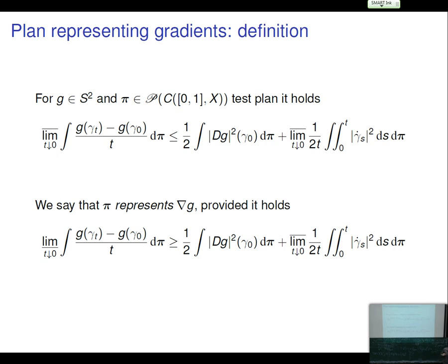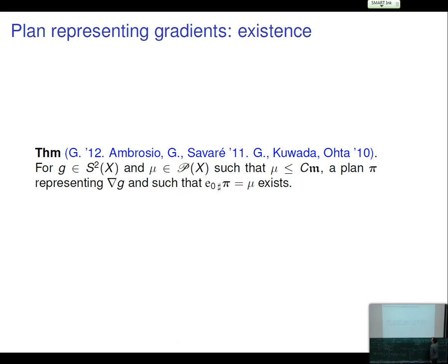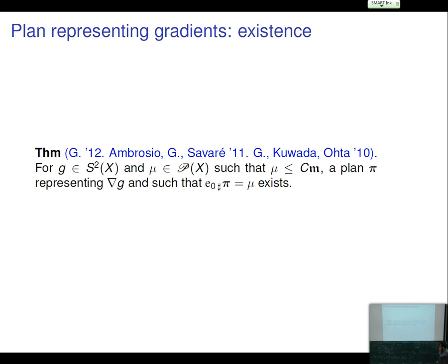On an arbitrary metric measure space, plans representing the gradient exist: given any Sobolev function g and any measure μ bounded from above by a constant times m, one can find a test plan π representing the gradient of g with e₀_*π = μ. This is a first-order result. The theorem has been stated and proved by myself; its proof uses tools already present in the paper with Gigli and Savaré on the identification of gradient flows.